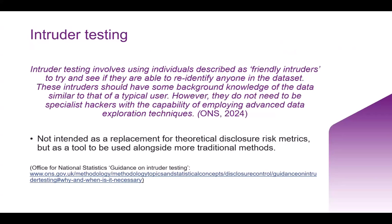Finally, checking your anonymization. The Office for National Statistics has written about intruder tests, which involves using individuals — friendly intruders — to try and see if they can re-identify anonymized data. More and more data owners are now using these intruder tests as a final check to see whether their data has been sufficiently and effectively anonymized. This is very similar to the practices used at the UK Data Service.